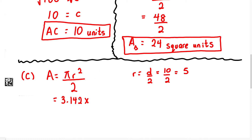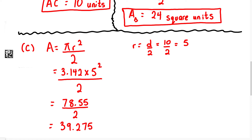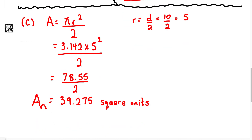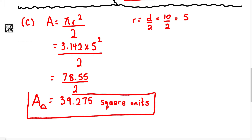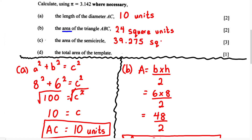We now calculate: 3.142 multiplied by 5 squared, divided by 2. That gives us 3.142 times 25 equals 78.55, divided by 2, which equals 39.275 square units. This is our answer for the area of the semicircle — and don't forget to write square units.